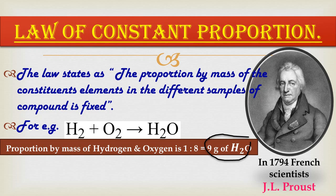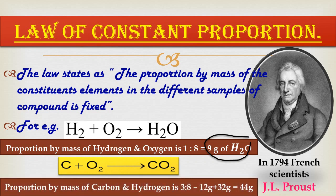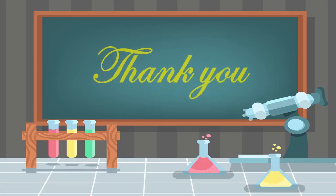Similarly, the proportion by mass of carbon to oxygen in carbon dioxide (CO₂) obtained from any source is 3:8. The mass of oxygen is 8 in both water and CO₂, which is fixed — this is the Law of Constant Proportion. This means that in 44 grams of CO₂, there are 12 grams of carbon and 32 grams of oxygen, maintaining the 3:8 ratio. That's it for today — the next part of the lesson will continue in the next session.